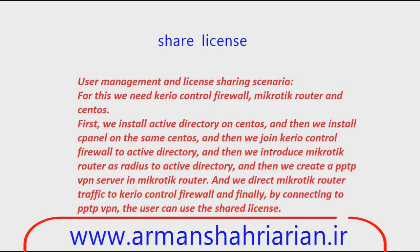First, we install Active Directory on CentOS, and then we install CpAnal on the same CentOS. Then we join Karyo Control Firewall to Active Directory, and we introduce MikroTik Router as Radius to Active Directory. After that, we create a PPTP VPN server in MikroTik Router.